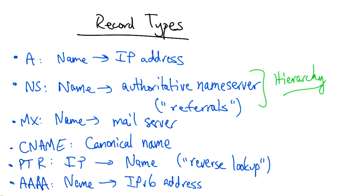Finally, a quad A record maps a domain name to an IPv6 address. Let's take a look at a couple of different examples of domain name lookups using a command line utility called dig.